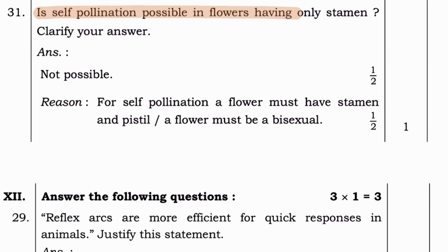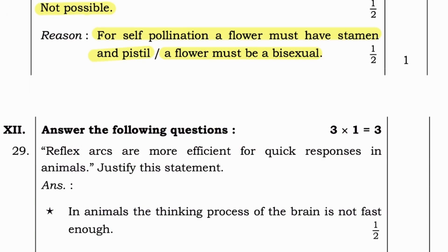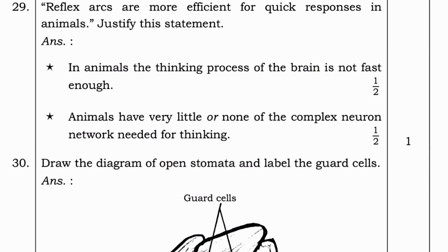Next question. Is self-pollination possible in flowers having only stamen? Clarify your answer. Answer is not possible. Because for self-pollination, a flower must have stamen and pistil or a flower must be bisexual.